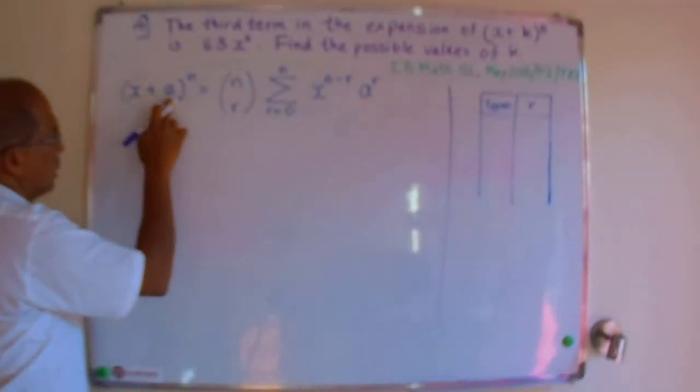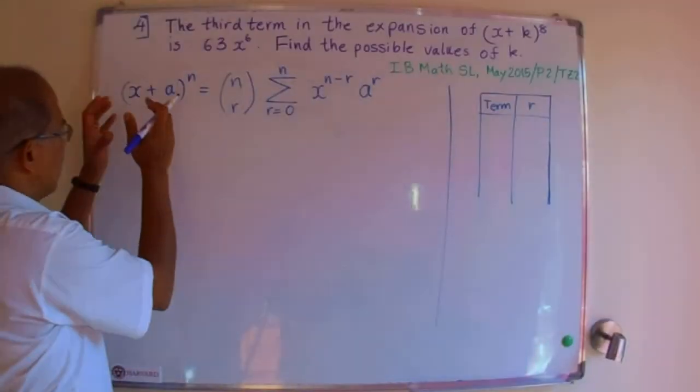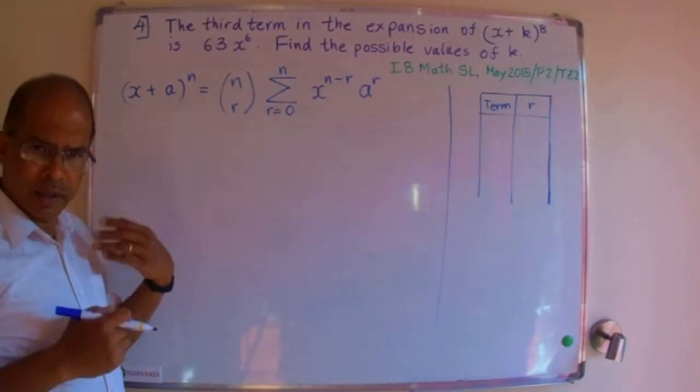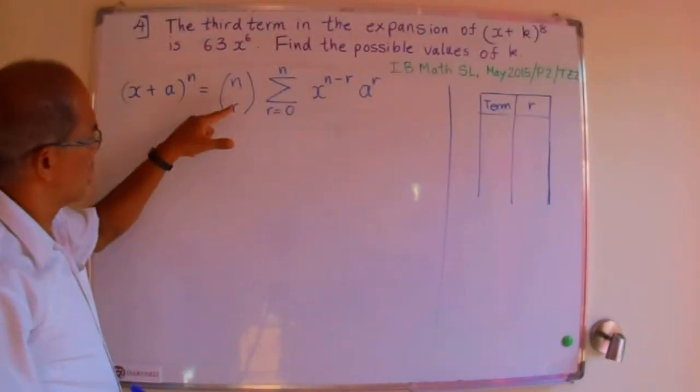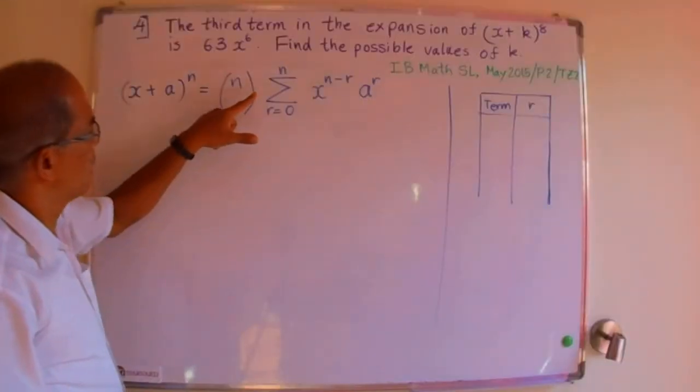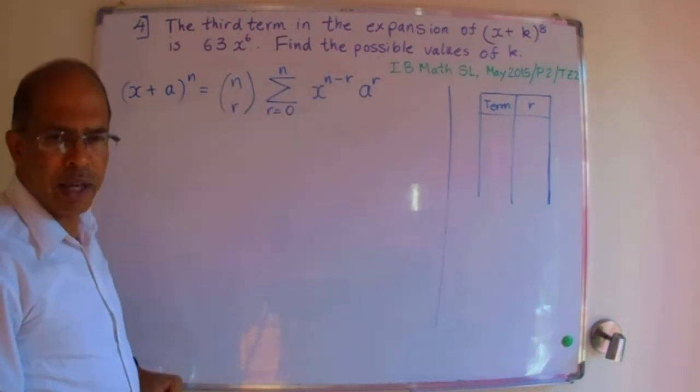You have term 1, term 2, and the power to which the binomial addition is being raised to. You have a combination here, n combination r, and then you sum up all the terms of the form x to the power n minus r, a power r.